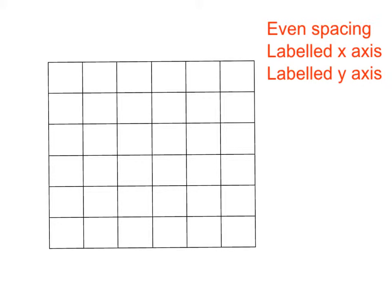The first one is that our grid map needs even spacing. We need to label our x-axis and we also need to label our y-axis as well.